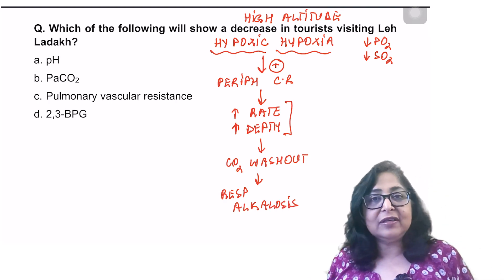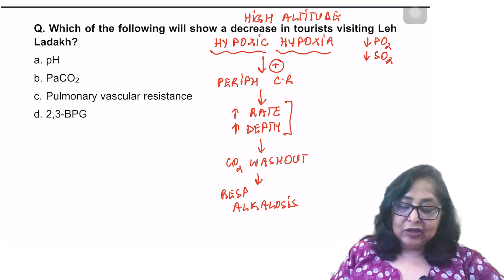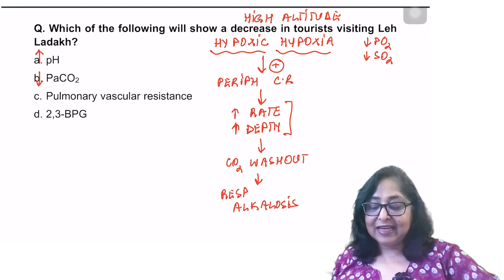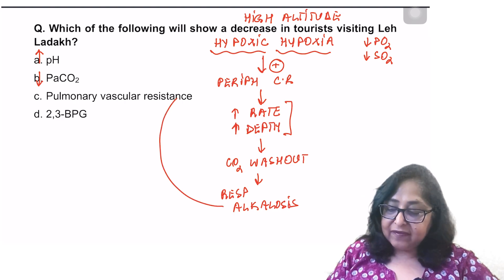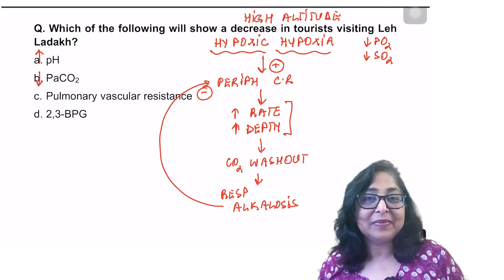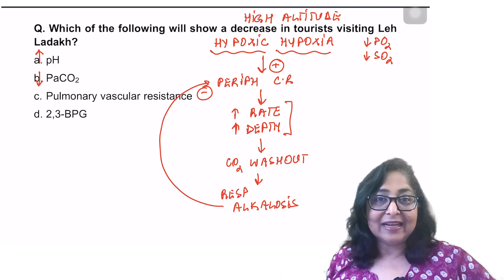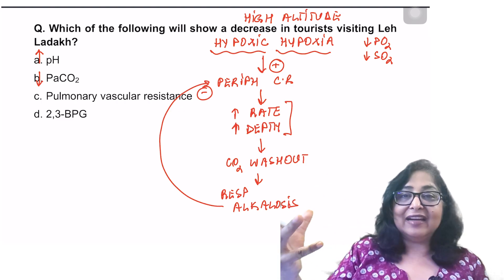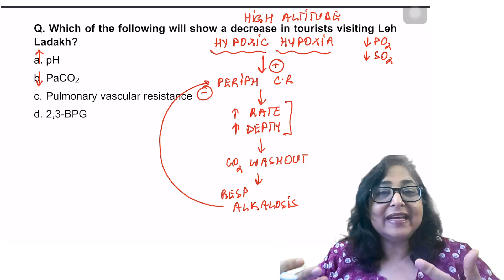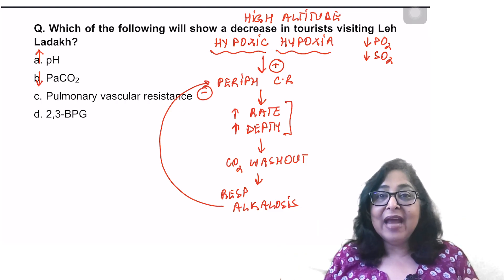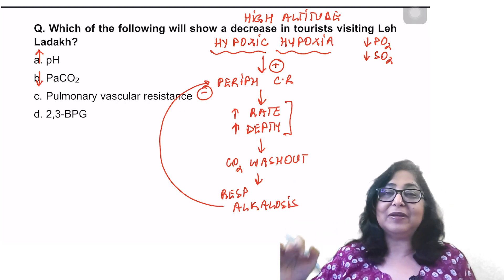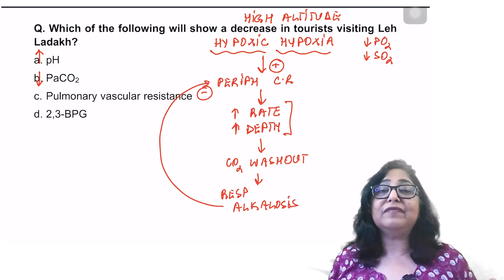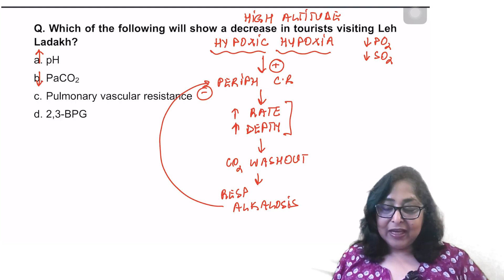In respiratory alkalosis, the pH rises and PaCO2 decreases. Alkalosis has an inhibitory effect on the peripheral chemoreceptors, whereas acidosis excites them. At high altitude, there is less oxygen in the atmosphere; to compensate, we hyperventilate, but the respiratory drive gets suppressed by the resulting respiratory alkalosis. The body then corrects this alkalosis — and that is the process of acclimatization.